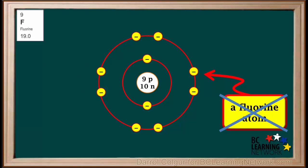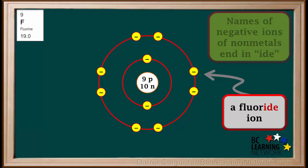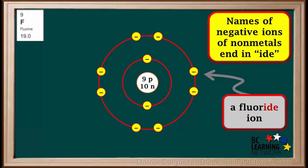It now has 9 protons and 10 electrons, so it can no longer be called a fluorine atom. It is now called a fluoride ion. Notice the name of this ion ends in IDE. Names of negative ions of non-metals are always changed so they end in IDE.